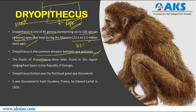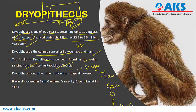Fossils of Dryopithecus have been found in a region ranging from Spain to the Republic of Georgia. Regarding spatial distribution, Dryopithecus originated in Kenya and later distributed to France, Spain, Germany, Kenya, India, Hungary, Greece, and elsewhere. They lived in thick forests where resources were available in plenty. Dryopithecus fontani was the first fossil great ape discovered, found in Sansan, France, by Edward Lartet in 1856.